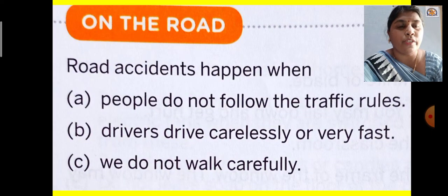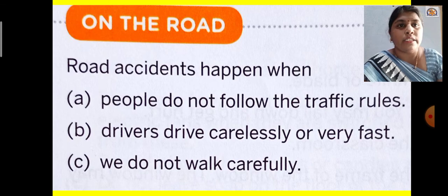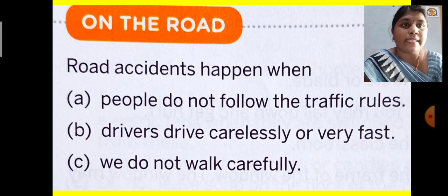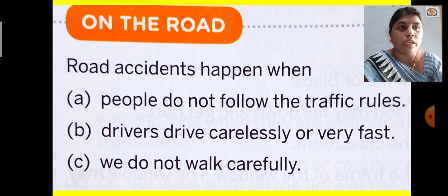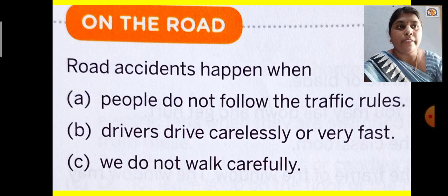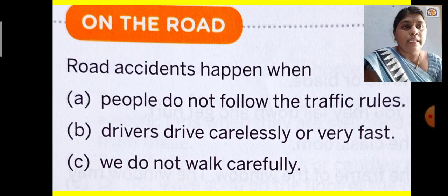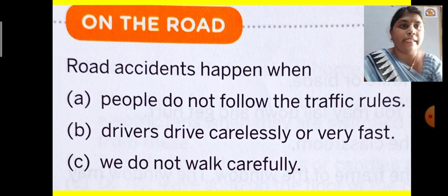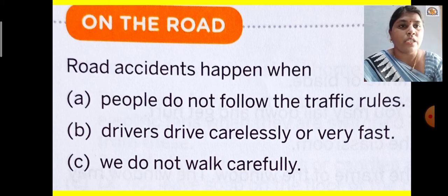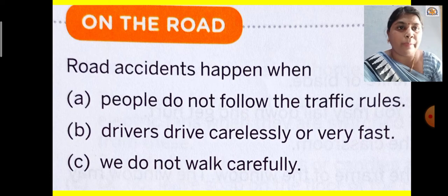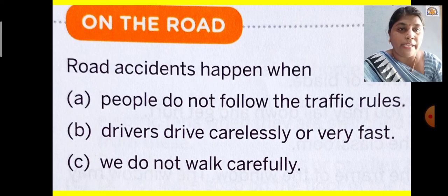On the road, which safety rules do you have to follow? Road accidents happen when people do not follow the traffic rules. If everybody follows the traffic rules, then accidents will not happen. But people do not follow them, that's why accidents happen.